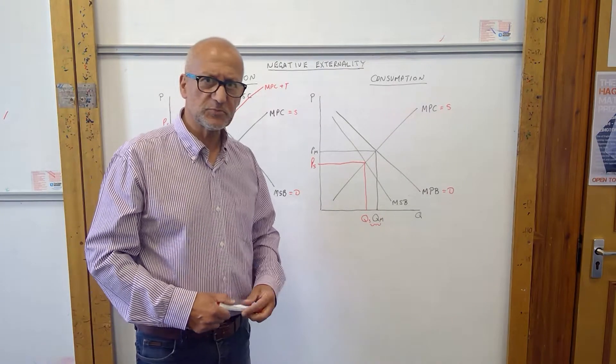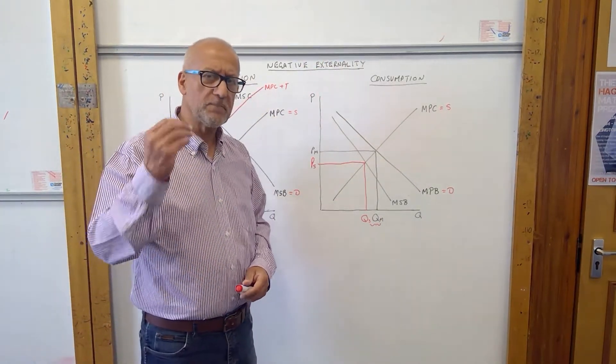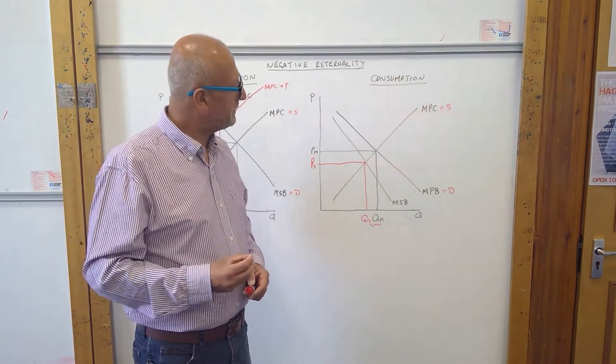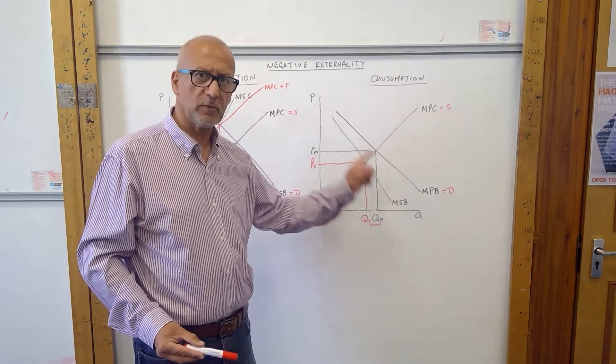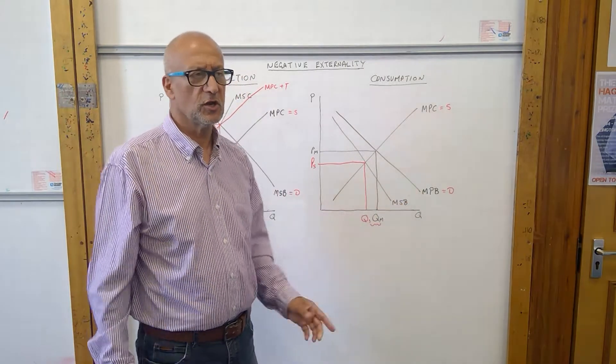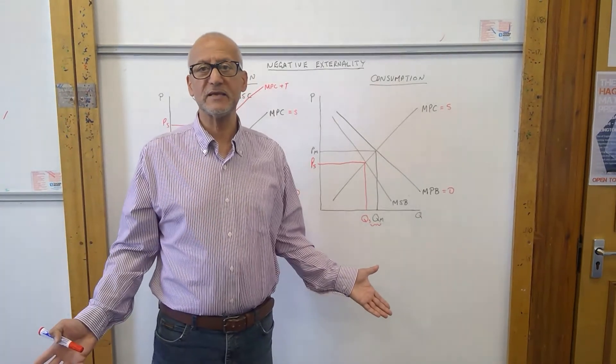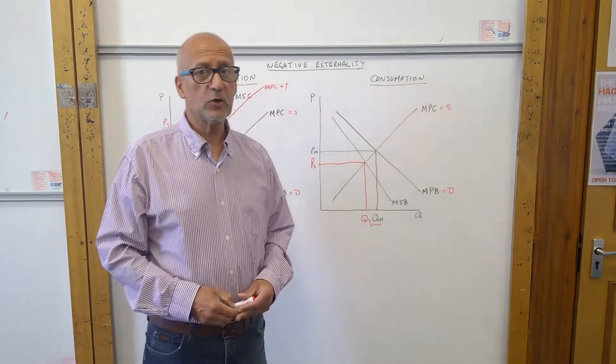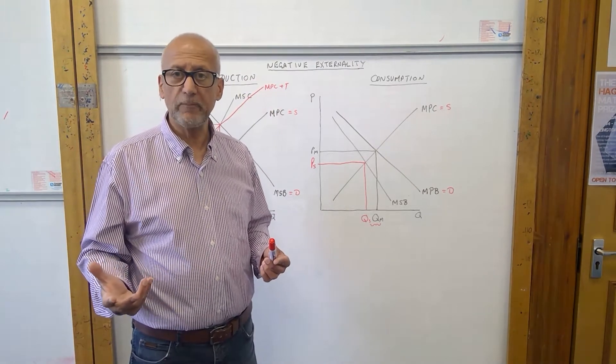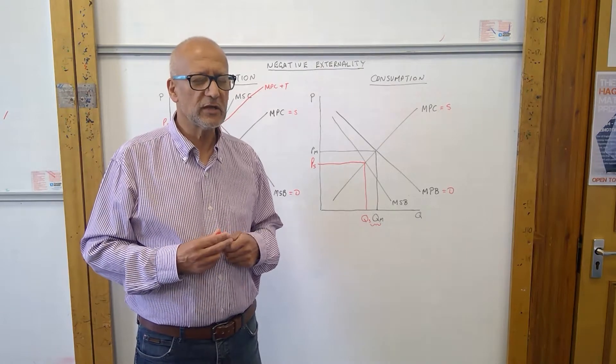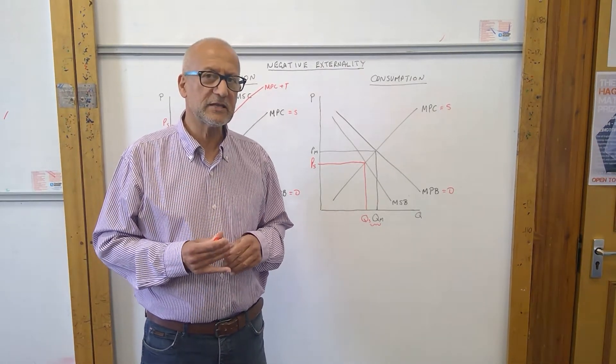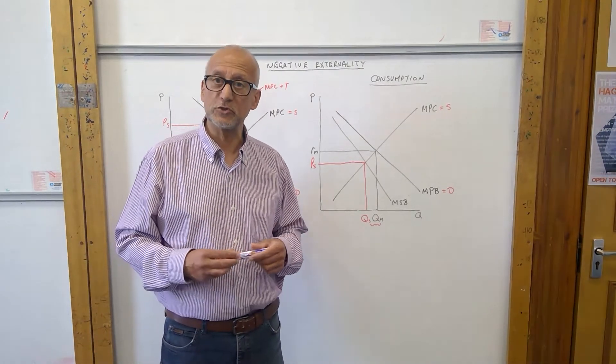Let's have a look at the consumption externality. In this particular case, we may be more inclined to address the demand because the problem is the consumer is consuming too much. We need the consumer to consume less. So again, we could use a public information campaign. We could use a certain amount of nudge theory to make people feel guilty about doing certain things.